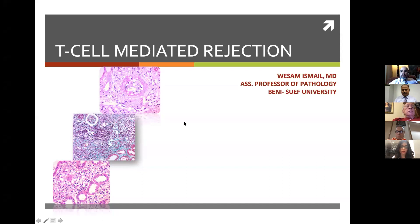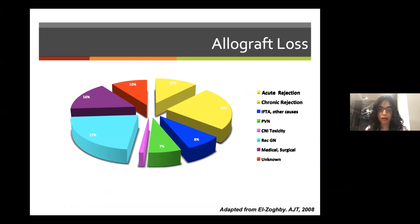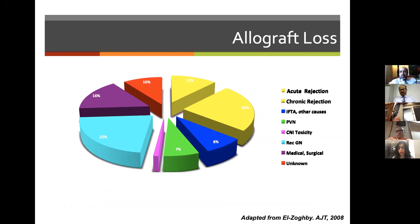Thank you very much, Dr. Hassan, for the introduction. Today is the second part in transplantation pathology, and I would like to focus on T-cell mediated rejection and its related differential diagnosis, and hopefully cover viral nephropathies as well. Since we started transplantation, our main problems in allograft loss still rotate around rejection — whether acute or chronic — followed by interstitial fibrosis and tubular atrophy, sometimes of unknown cause, and viral infections headed by polyomavirus nephropathy.